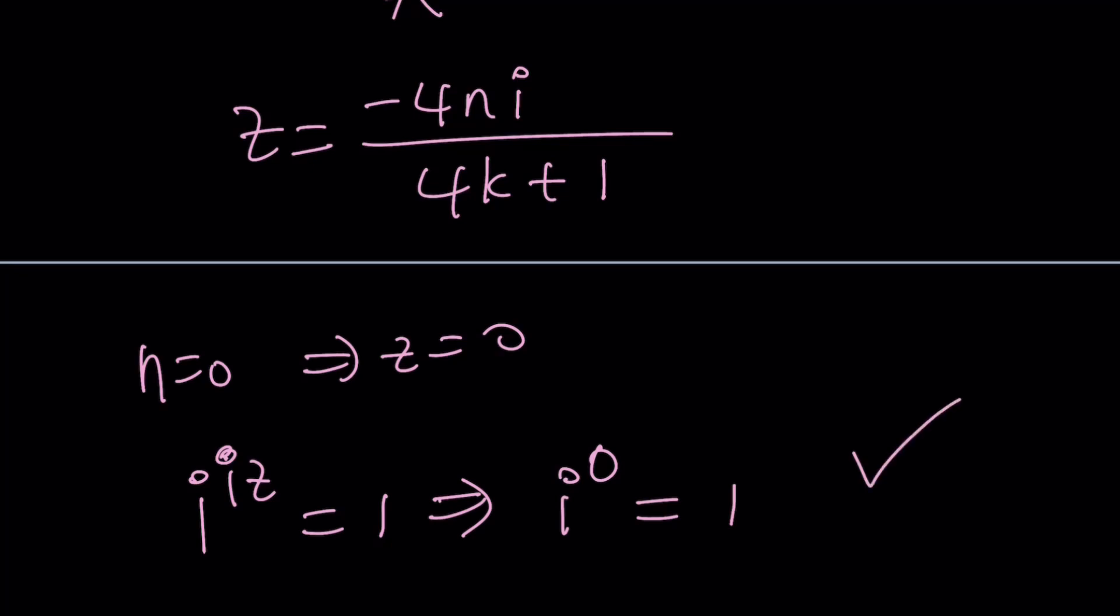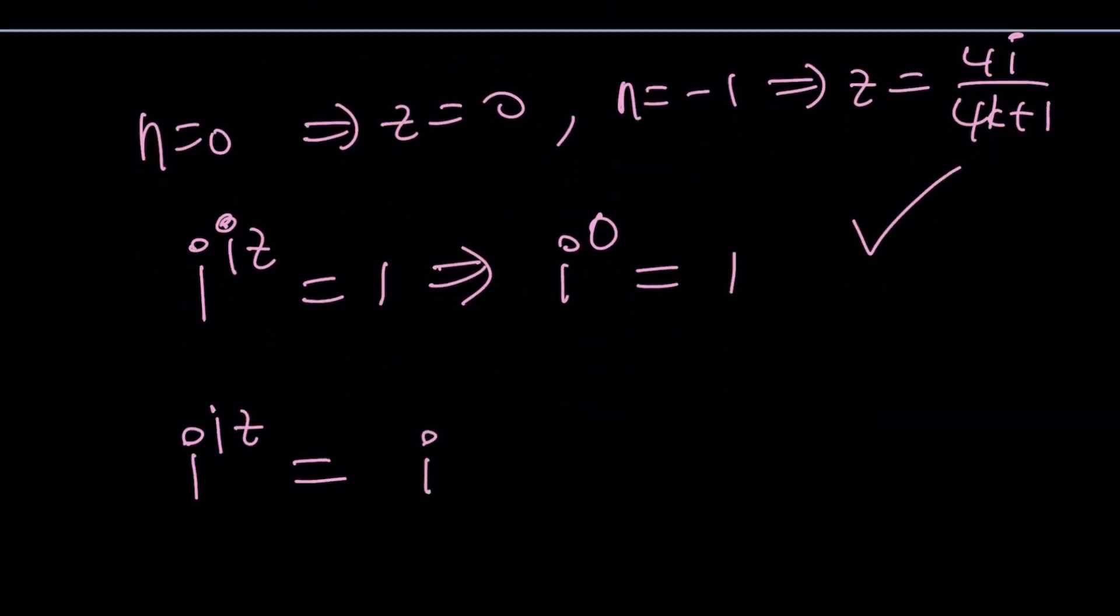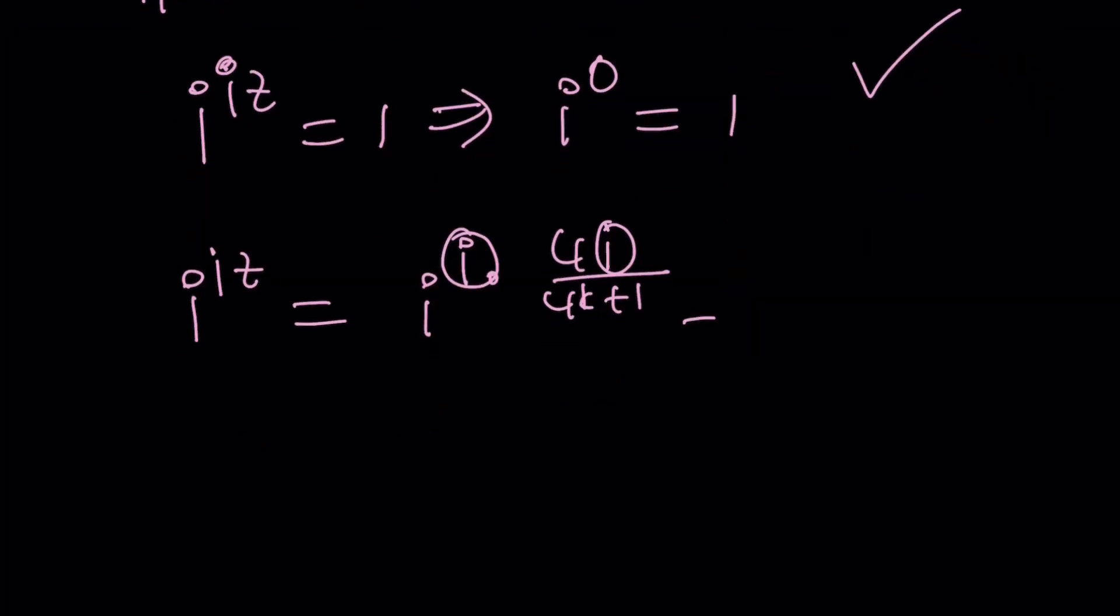What about other values? For example if n is equal to negative 1. If n is equal to negative 1 we would be getting 4i divided by 4k plus 1. You're going to replace z with 4i over 4k plus 1 but i times i is i squared which is negative 1. This is going to give us i to the power negative 4 over 4k plus 1. You can write this as i to the 4 to the power negative 1 over 4k plus 1. Obviously i to the 4 is 1 and if you raise it to any power it's going to be 1. The nice thing is that 4k plus 1 is never a multiple of 4. It leaves a remainder of 1. So those two numbers will never cancel out because when those numbers cancel out we have a problem.